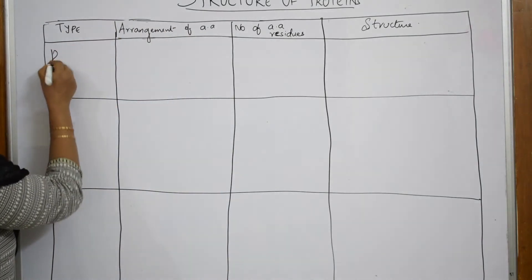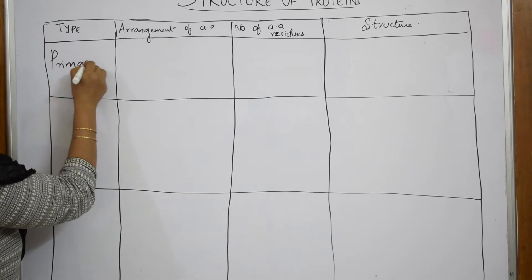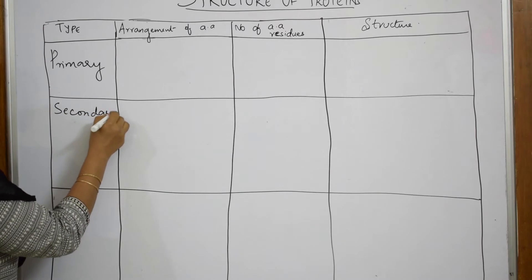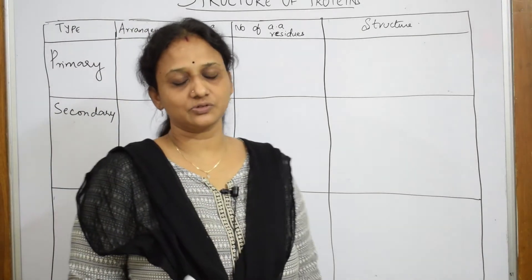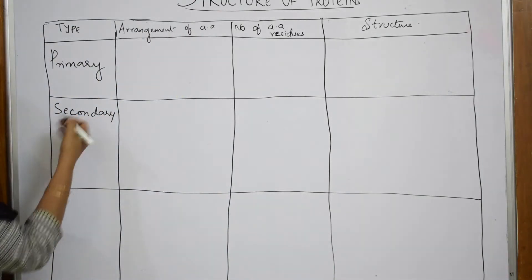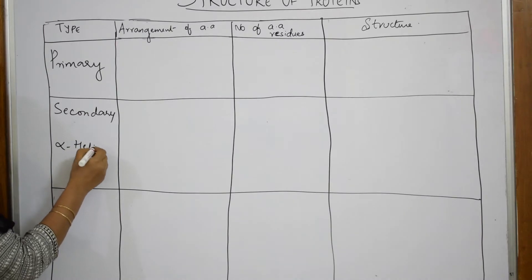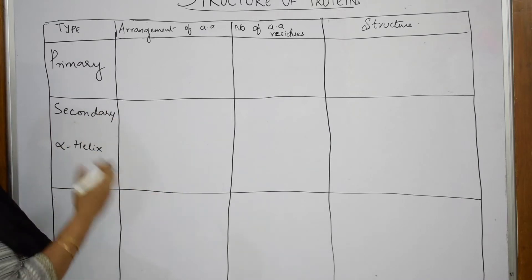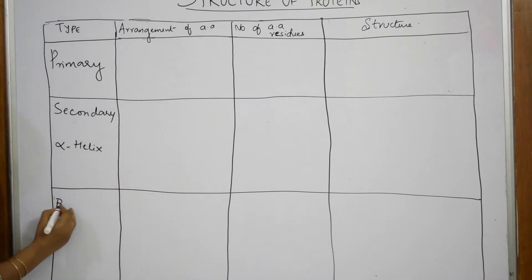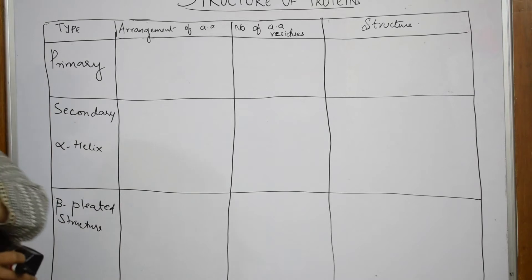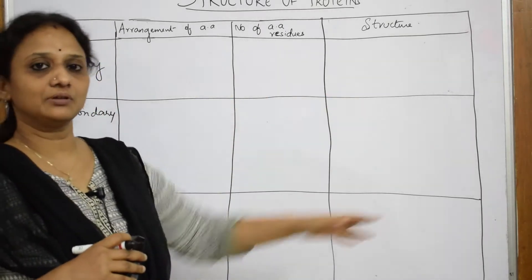Proteins are classified into primary, secondary, tertiary, and quaternary structures. The secondary structure is further divided into alpha helix — where the amino acids coil into a right-handed helical structure — and beta pleated structure. A tabular column has been prepared for all these, so when learning for your exam, memorize that table so all the details are in one place.